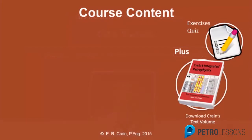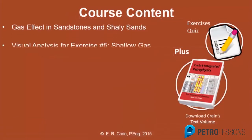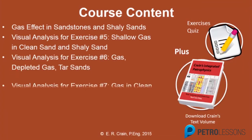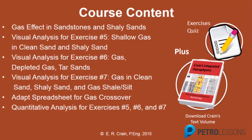In the last lecture we talked about gas corrections to the sonic, density, and the neutron when they're used individually. These corrections are pretty arbitrary and require some outside information, such as the core porosity or density-neutron logs in other wells. This lecture will cover gas effects on the density-neutron combination and we'll restrict it to sandstones and shaley sands.